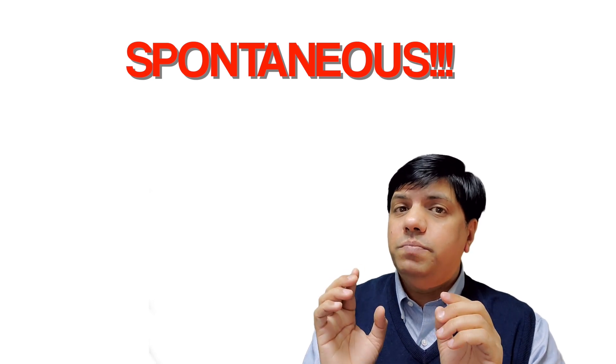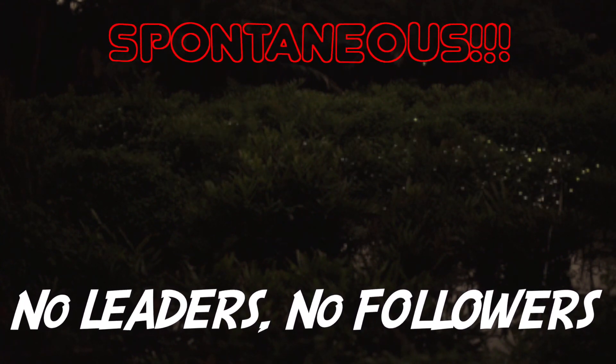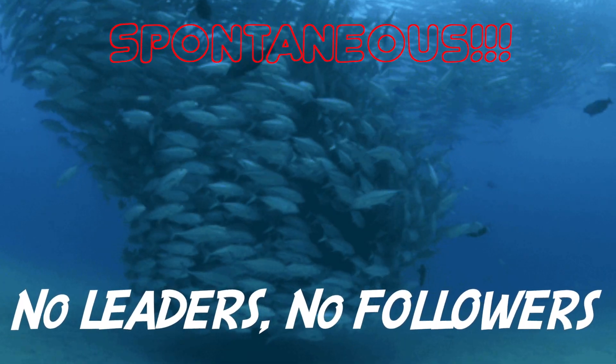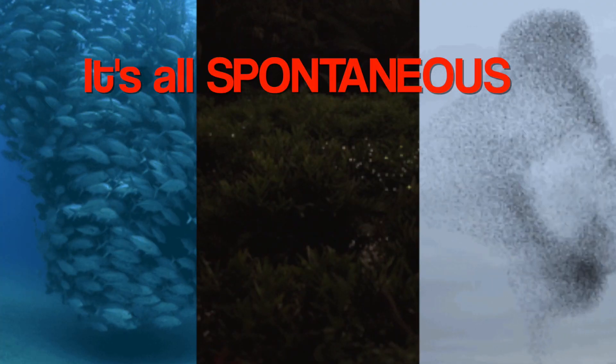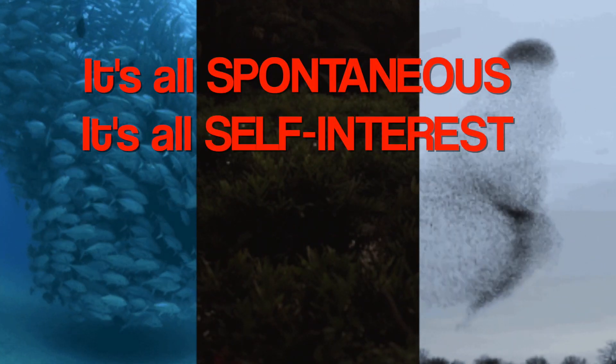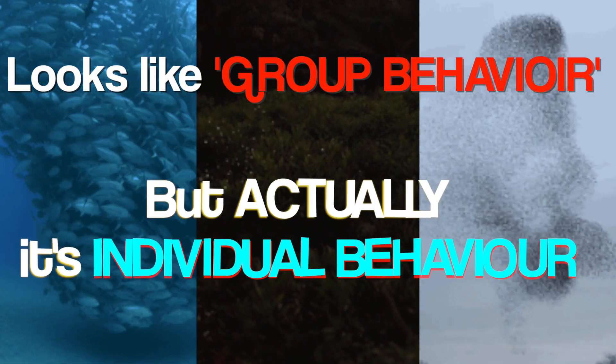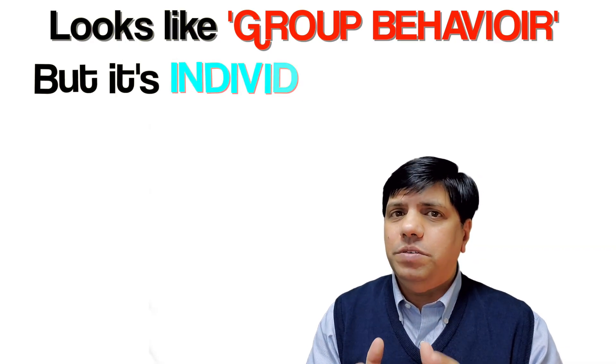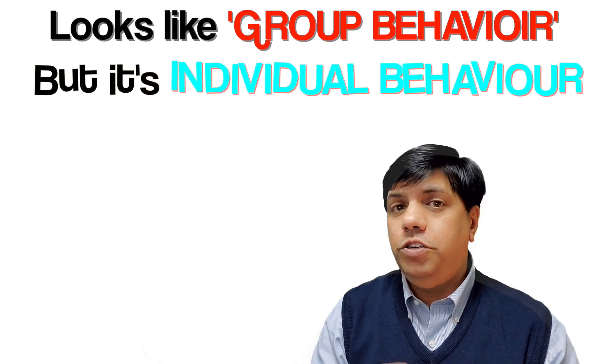That's why I said the word spontaneous is very important here. So there's no single organism that comes out as the first one to glow or the first one to start making a school of fish or a flock of birds. All of it happens spontaneously. So it's all self-interest. To unsuspecting eyes it does look like group behavior, but in reality it's individual behavior.